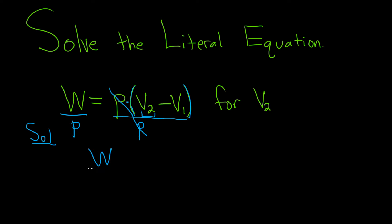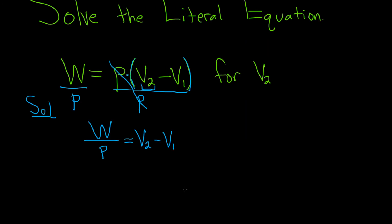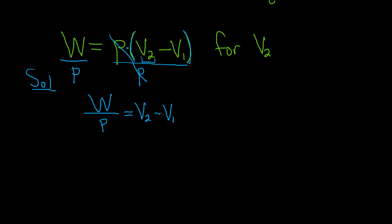So you're left with w over p, and that's equal to v2 minus v1. We're looking for v2, so we're almost there. We have this minus v1 here, so to get rid of that we'll use the opposite operation — addition. So plus v1 on both sides. These cancel, so we have w over p plus v1, and that's equal to v2.